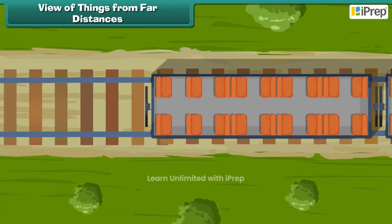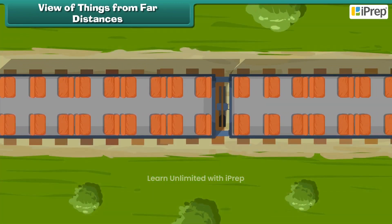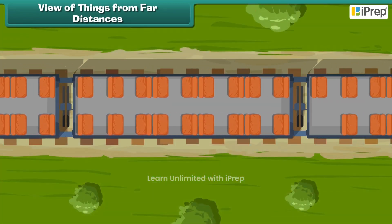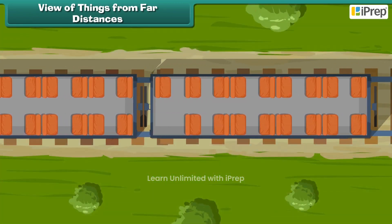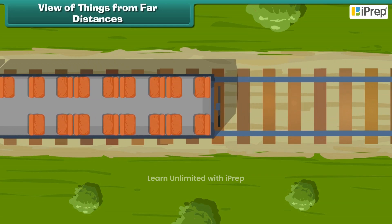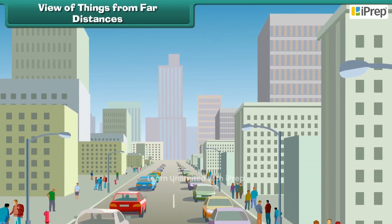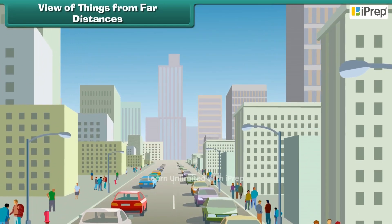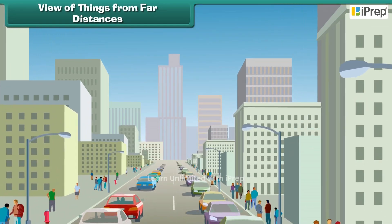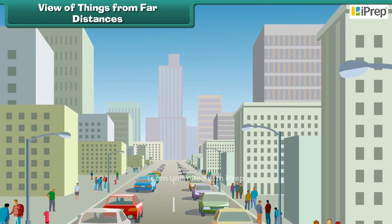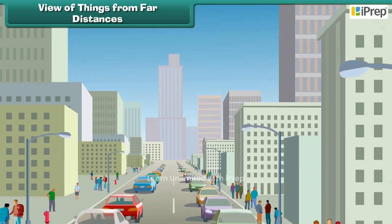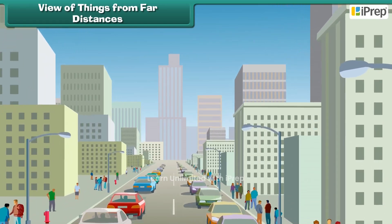He was surprised when the train looks like a long box from the height. Cars and buses look like toys and people look like ants.